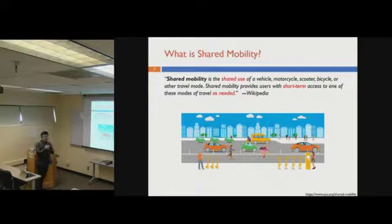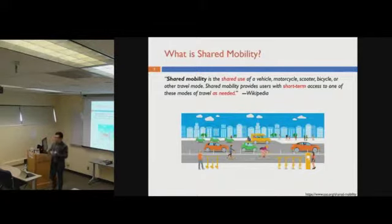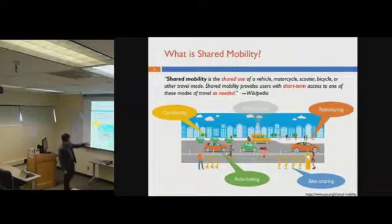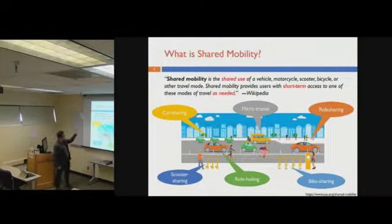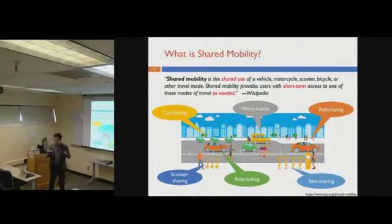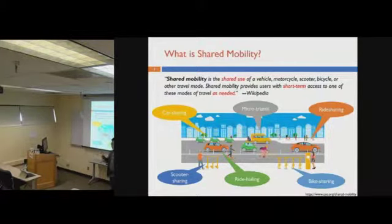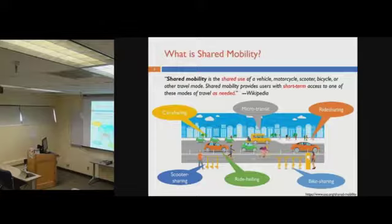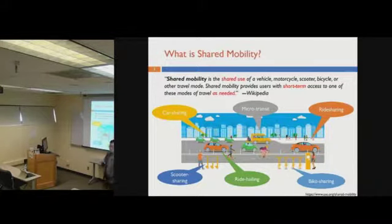I will talk about two topics: how we try to improve the performance and utilization of resources in shared mobility systems. Shared mobility is a very general concept. Based on different travel modes, it has different names — for example, ride sharing, bike sharing, scooter sharing, car sharing, and microtransit. But all of these different modes share some common features. One is shared use of vehicles. The second is short-term access. And the most important is that they are almost always on-demand service.